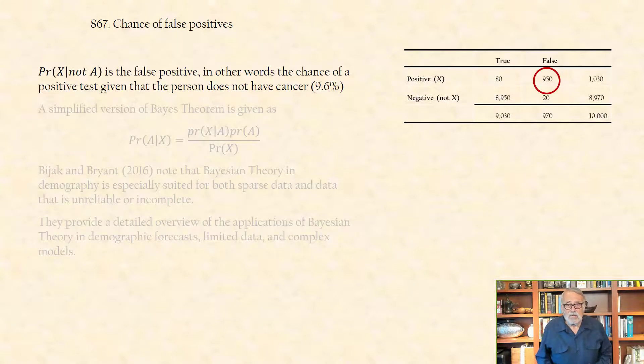Pr(X|not A) is the false positive, in other words, the chance of a positive test, given that the person does not have cancer, that is 9.6%. A simplified version of Bayes' theorem is given here.